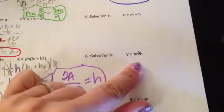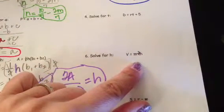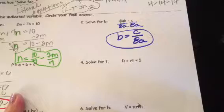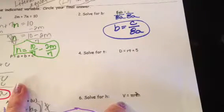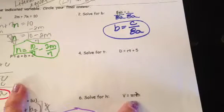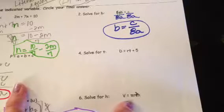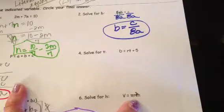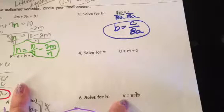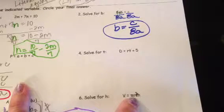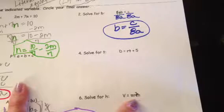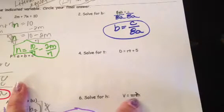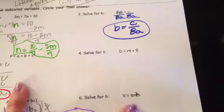In number six, in order to solve for H, I want you to look back at how we solved number two. It's actually V = πR²H. Volume of a cylinder. What we're going to do, πR²H, we're going to divide both sides by the π and the R² to get it away from the H.